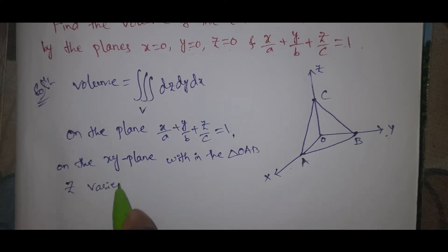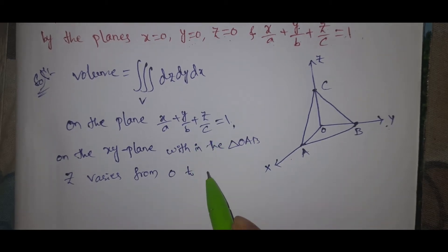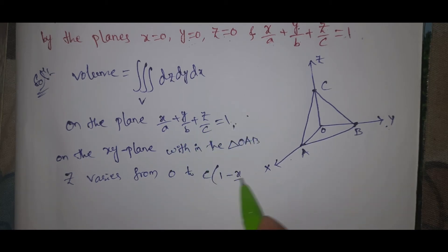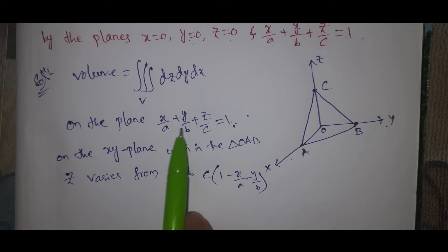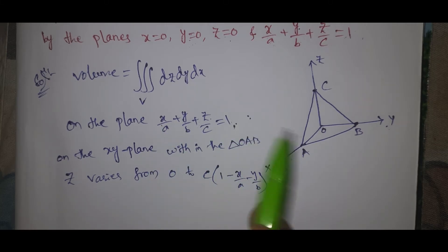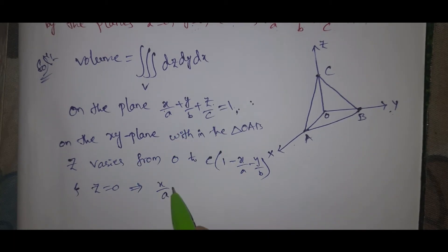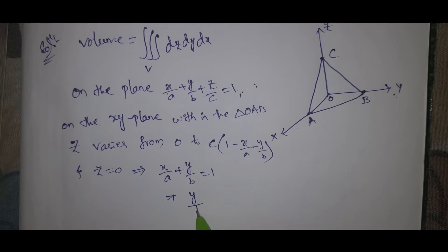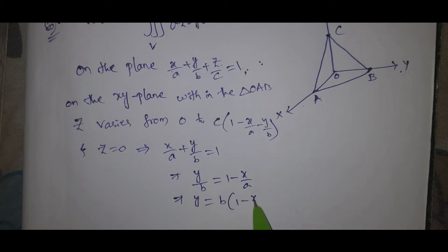Z varies from 0 to c(1 - x/a - y/b). Setting z = 0 in the plane gives x/a + y/b = 1, which implies y/b = 1 - x/a, so y = b(1 - x/a). Therefore y varies from 0 to b(1 - x/a).